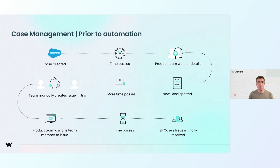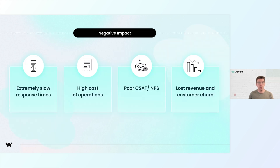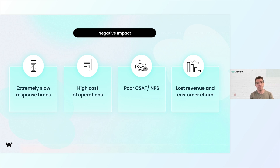As you can see, the impact of this manual process is pretty significant. Time is wasted on low-value tasks like data entry and manual handoffs. Response times are slow with multiple delays between teams. This leads to higher operational costs as people spend time on data entry instead of strategic work. Worse still, customer satisfaction and NPS scores drop because of the delays in addressing customer issues, and in some cases, unresolved issues can lead to lost revenue if customers churn.